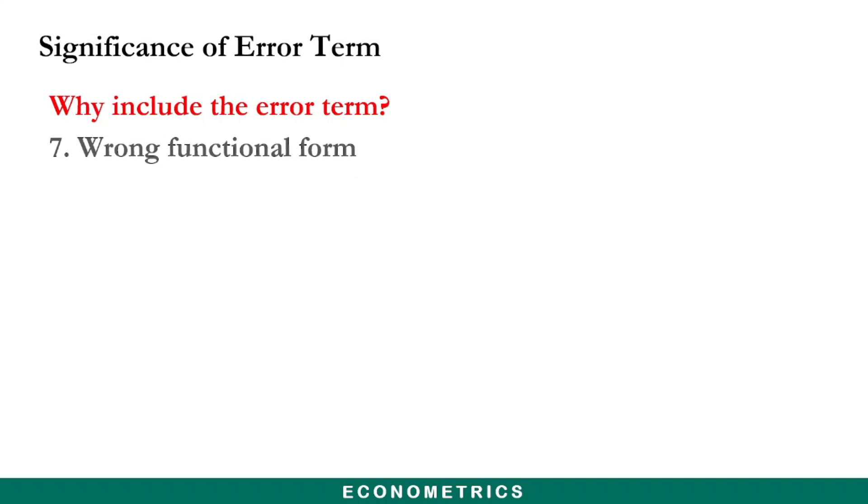The seventh one is wrong functional form. There are times you may decide to use logarithmic transformed variables in your model. Meanwhile, the usual untransformed variables can answer the questions you seek from the model. Therefore, this can lead to a misspecification of the econometric model and pose serious concerns about the methodology you apply. So we include the u parameter to account for any unexplained relationships in our models.